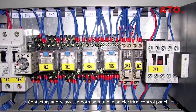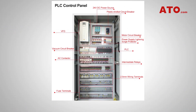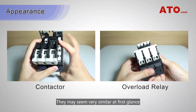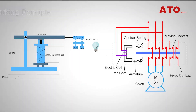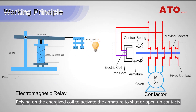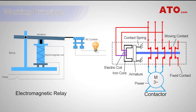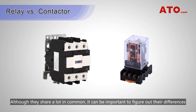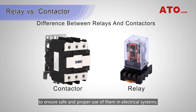Contactors and relays can both be found in an electrical control cabinet. They may seem very similar at first glance, and they also work in almost the same way, relying on an energized coil to activate the armature to open or close contacts and let the current pass through. Although they share a lot in common, it can be important to figure out their differences to ensure safe and proper use in electrical systems.